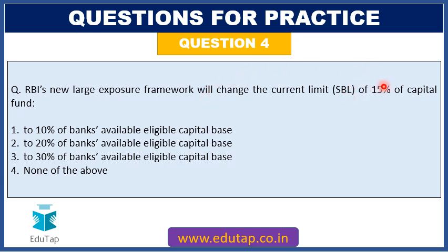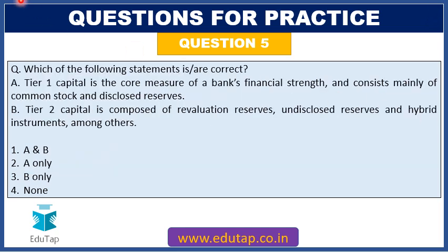MCQ 5: Which of the following is correct? (A) Tier 1 capital is the core measure of a bank's financial strength and consists mainly of common stock and disclosed reserves. (B) Tier 2 capital is composed of revaluation reserves, undisclosed reserves, and hybrid instruments. Both statements A and B are correct. Answer: Option 1 (A and B both).